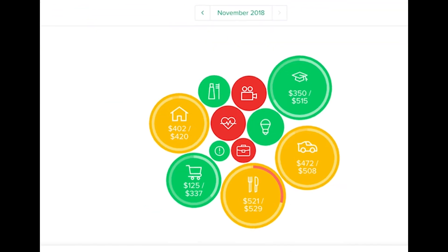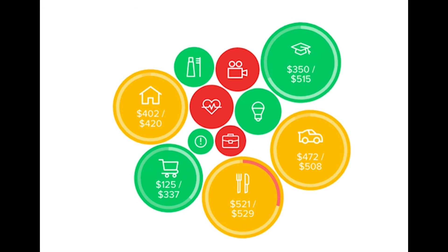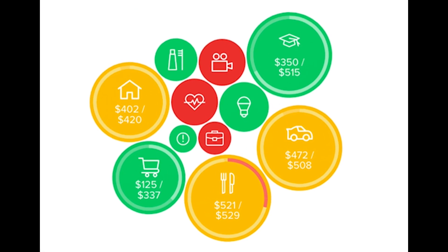Once you set up your budgets, you can view and edit them from the main budget screen, where each budget is represented by colorful bubbles that allow you to see both the health and the impact of your budget categories. The larger the bubble, the more of your income it takes up. The color of each budget indicates whether you are on track, nearing your budget limit, or over your budget limit.